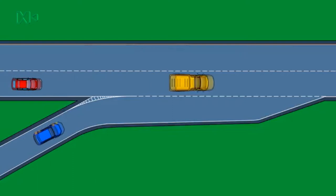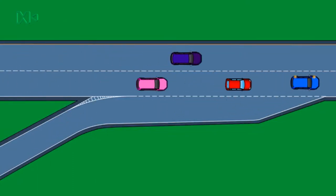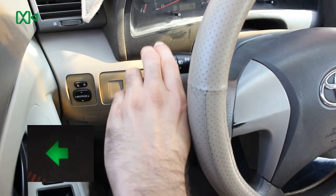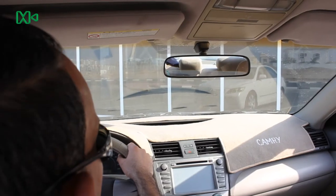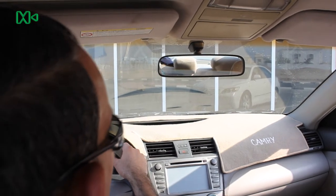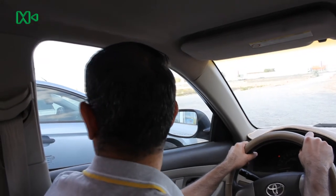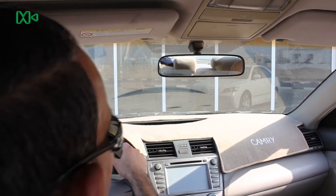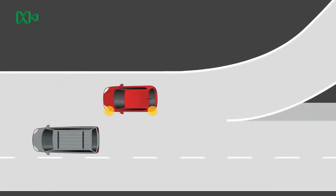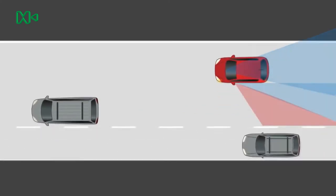Steps for merging into a highway: first, give a signal to the left; second, increase the speed to 100 kilometers per hour; third, look at the internal mirror; fourth, look at the left side mirror; fifth, look above the left shoulder; sixth, look at the internal mirror again; seventh, merge if it's safe to do so. Note that the vehicle must not move before completing all previous checks.